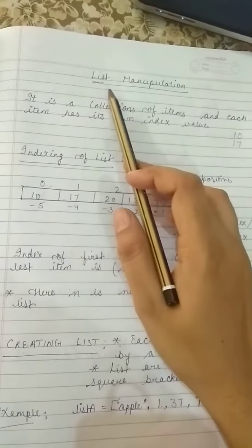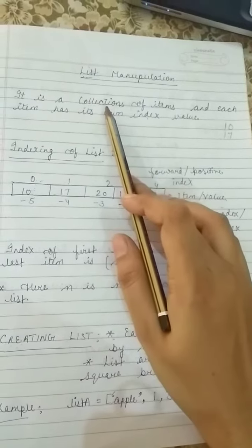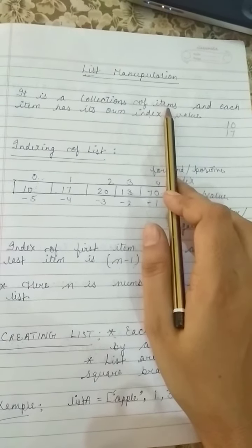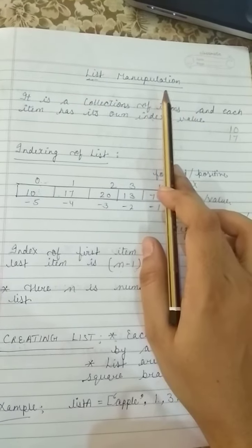Hello everyone. Today's topic is list manipulation. What is a list? A list is a collection of items, and each item has its own index value. Items can be of different data types. It is not necessary that all the items of a list should be of one same data type.